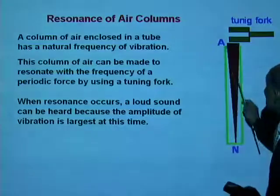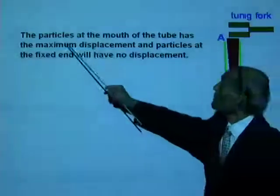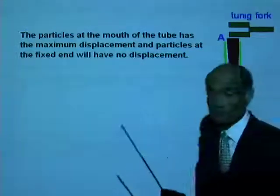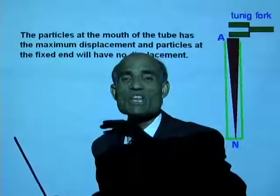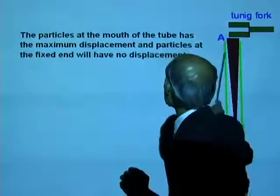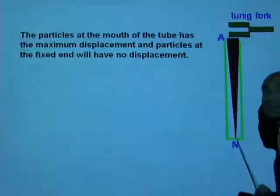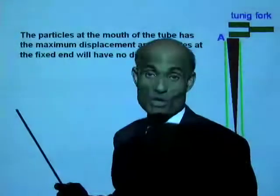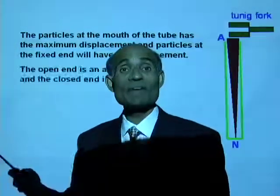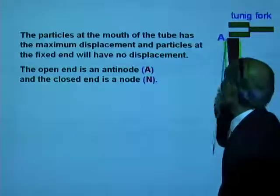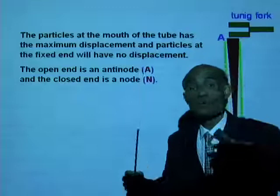When resonance occurs, there are nodes and antinodes formed inside the tube. The particles at the mouth of the tube have maximum amplitude — a node can never form at the mouth of the tube, so the mouth will always be an antinode. At the fixed end, you cannot have maximum displacement, so the fixed end will always be a node. If the tube is closed at one end, that closed end will have a node and the open end will have an antinode, with nodes and antinodes in between depending on the mode of vibration.